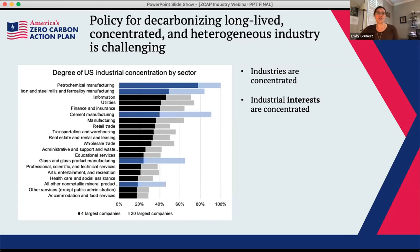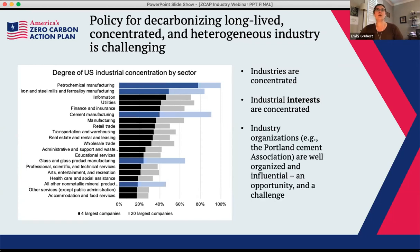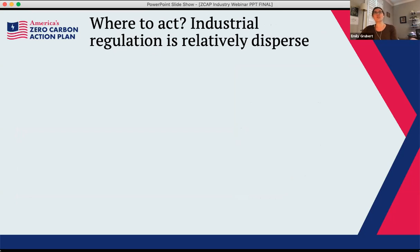Industrial interests are also fairly concentrated, which is a double-edged sword. It means there are opportunities to get an entire industry on the same page about next steps, but also a lot of opportunities for fairly directed and well-organized opposition to things that might lead to the disappearance of long-lived, capital-intensive assets. Industrial organizations like the Portland Cement Association and others are pretty organized and influential. So concentrated interest is both an opportunity and a challenge for policy — there is a lot of need to really understand the power structures within these industries.